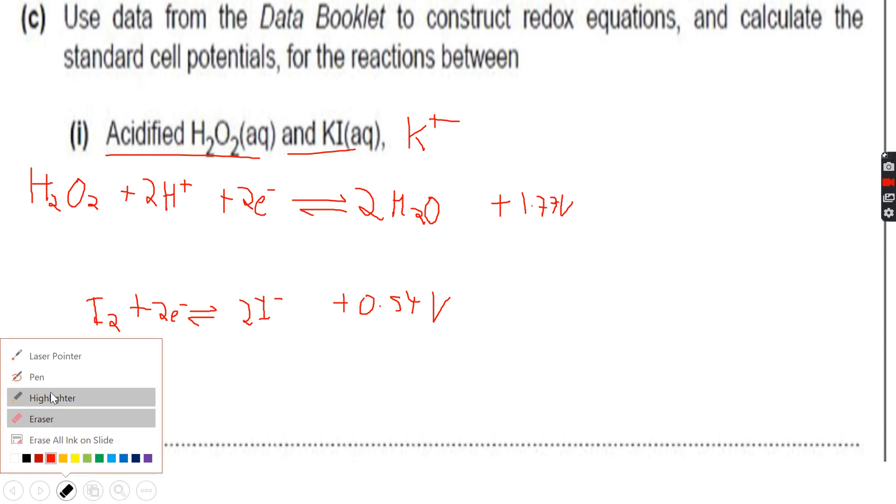Now if you look at this half equation for I2, +0.54V is less than 1.77V, so we will have to invert. This means H2O2 is reacting with the iodide ions, and in KI we have the iodide ions. This is the correct one, so we will be using this half equation instead of the K+ half equation.